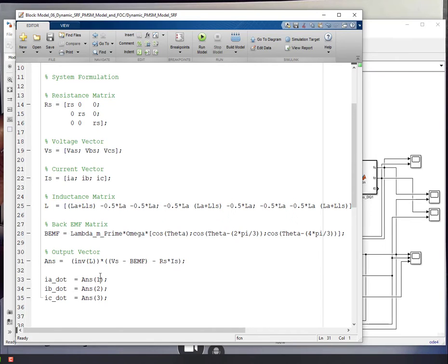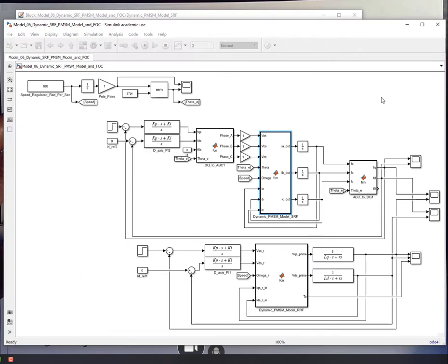And now we are assigning these different elements into our IA dot, IB dot, IC dot to be passed out to the outside, then goes to the integrator. And then IA, IB, and IC values get fed back to complete the model.